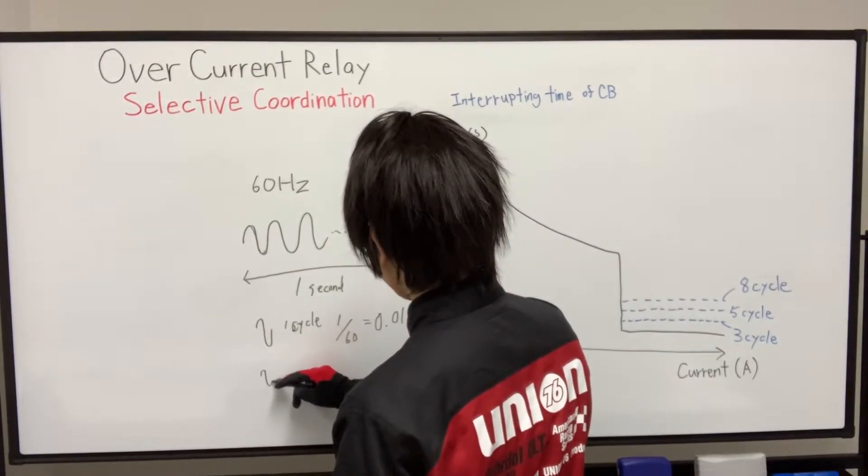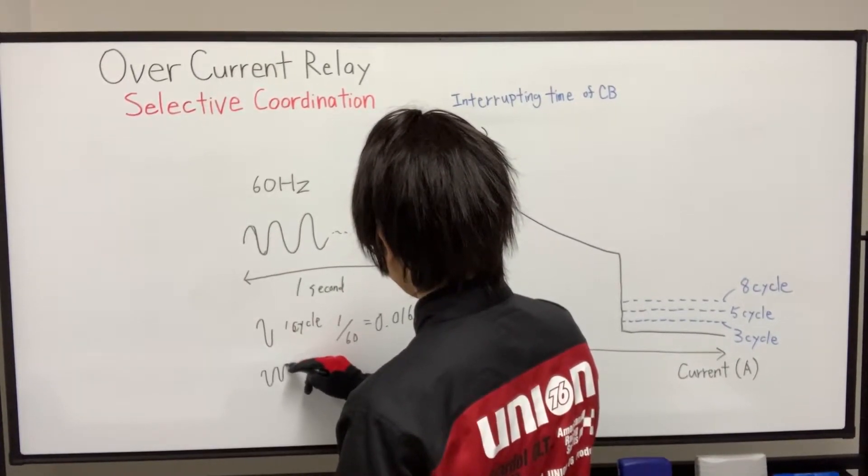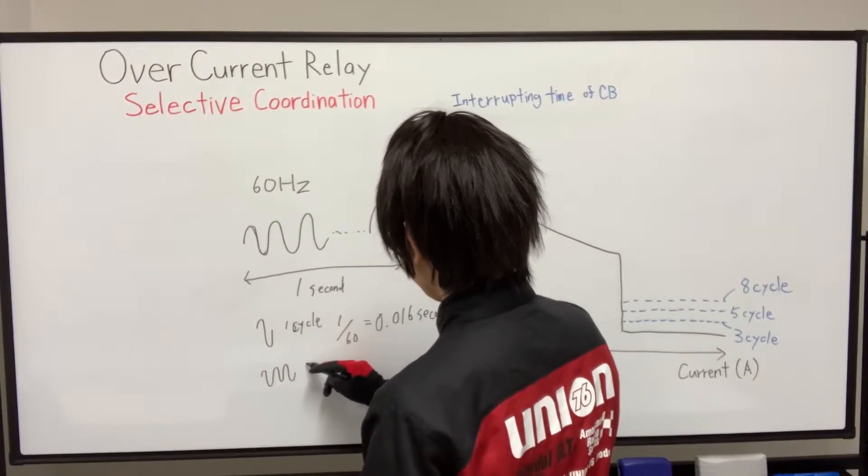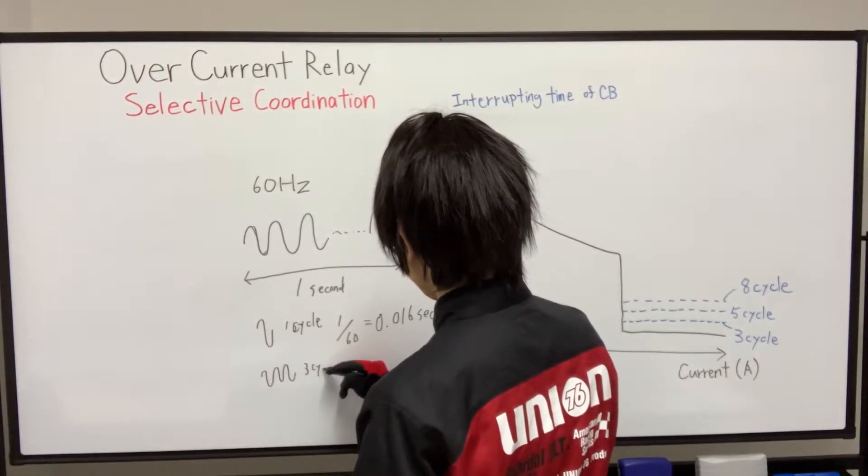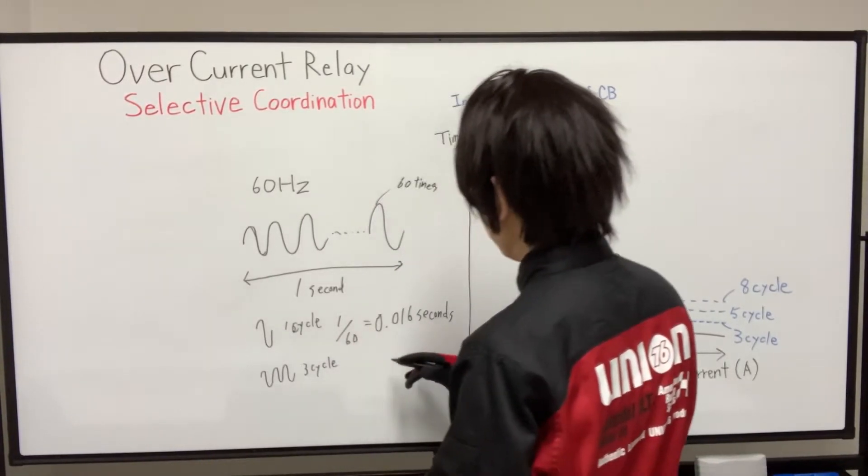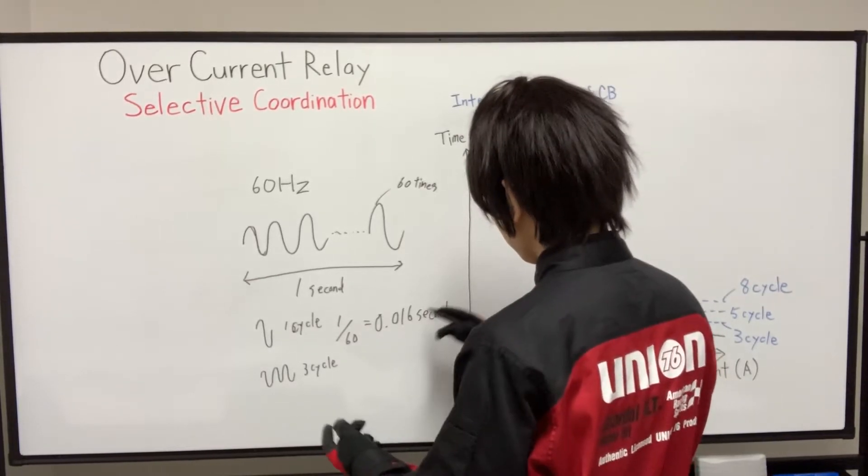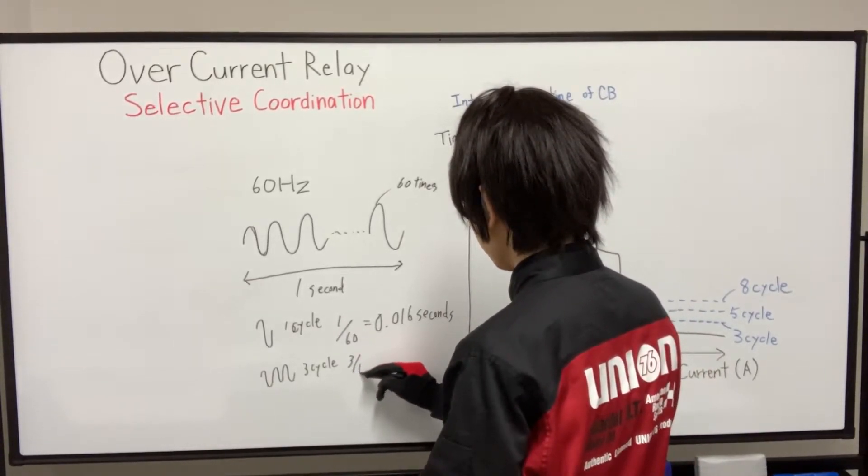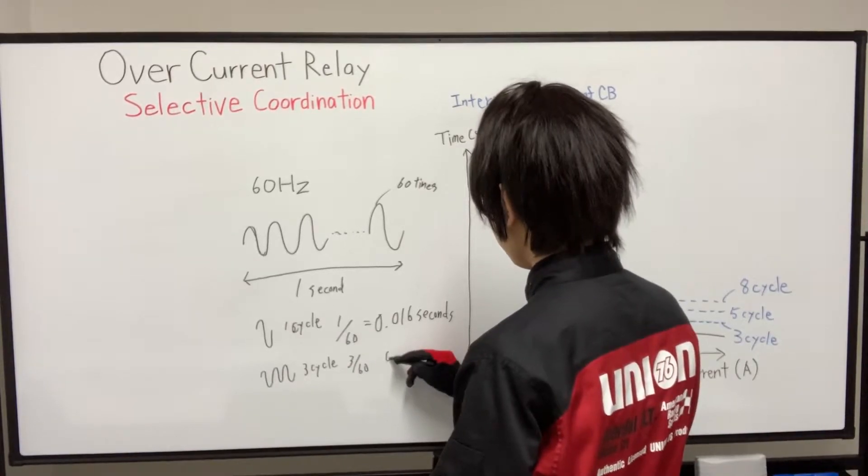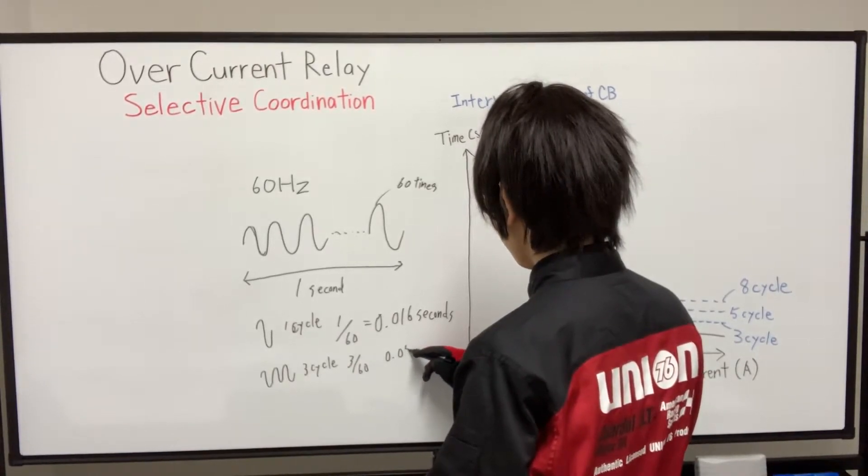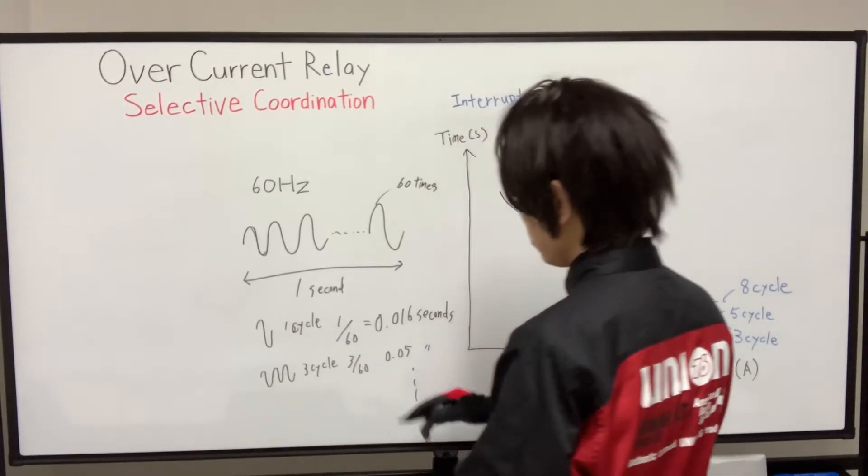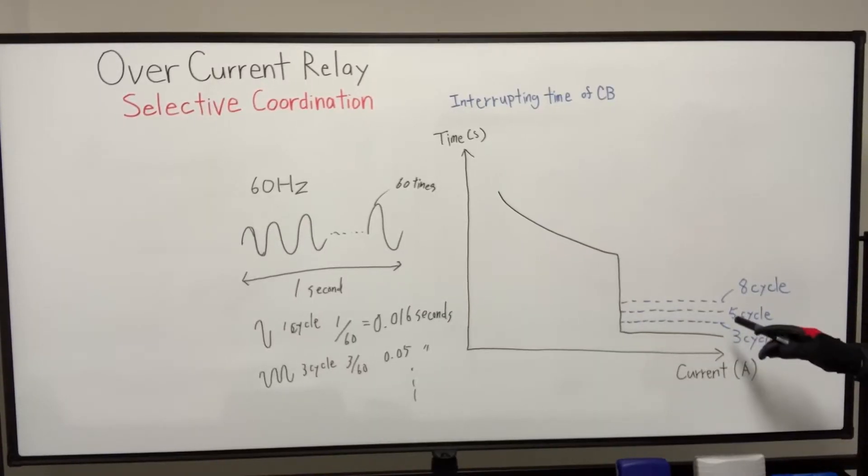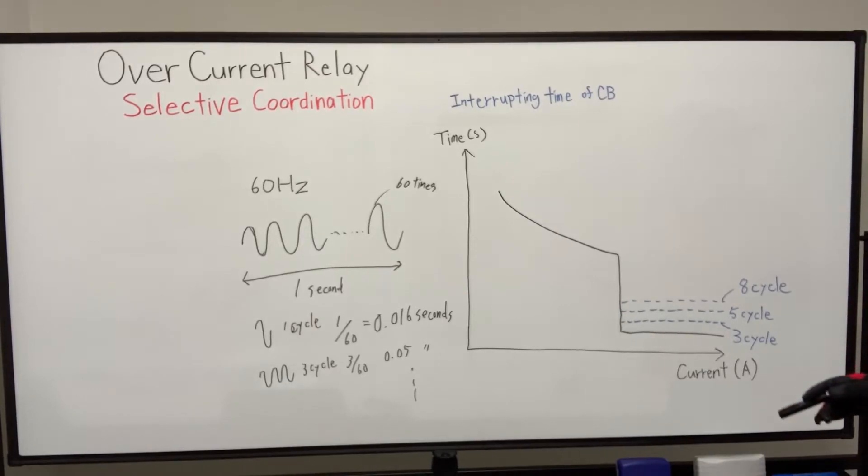And three cycle, similarly one, two, three, it's a little bit longer. So three divided by 60, that is 0.05 seconds. So this interrupting time of circuit breaker varies depending on each product's specification.